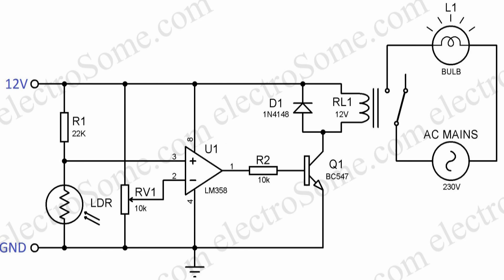Let's see the circuit diagram of the automatic night lamp. We can see that LDR is connected in series with a 22K resistor R1. This acts as a voltage divider, and thus the voltage across the LDR will vary depending on light. Voltage across LDR will be low if the light intensity is high and vice versa.